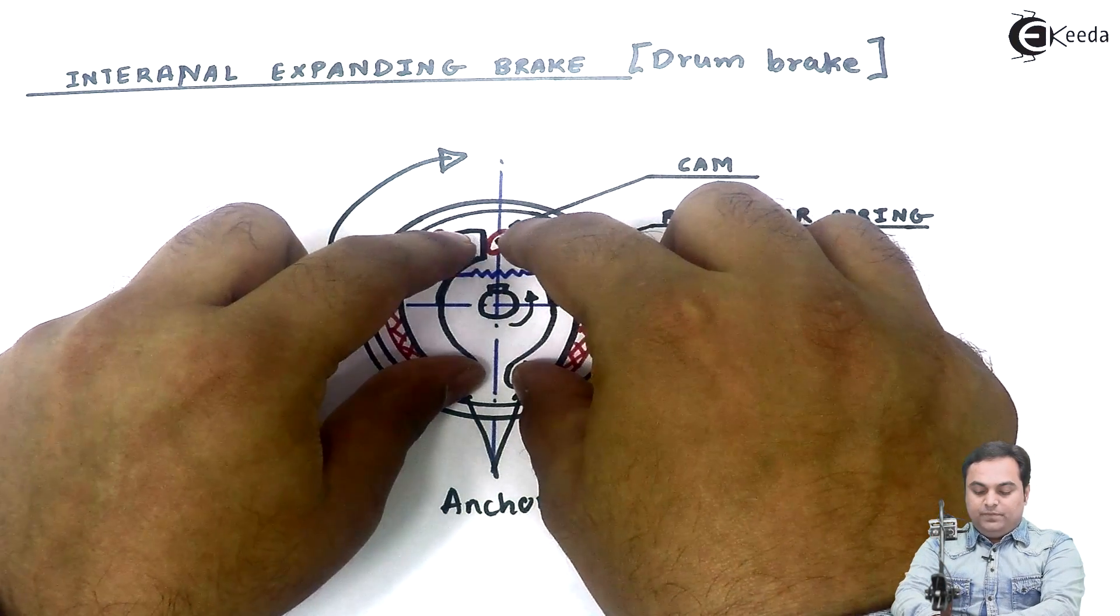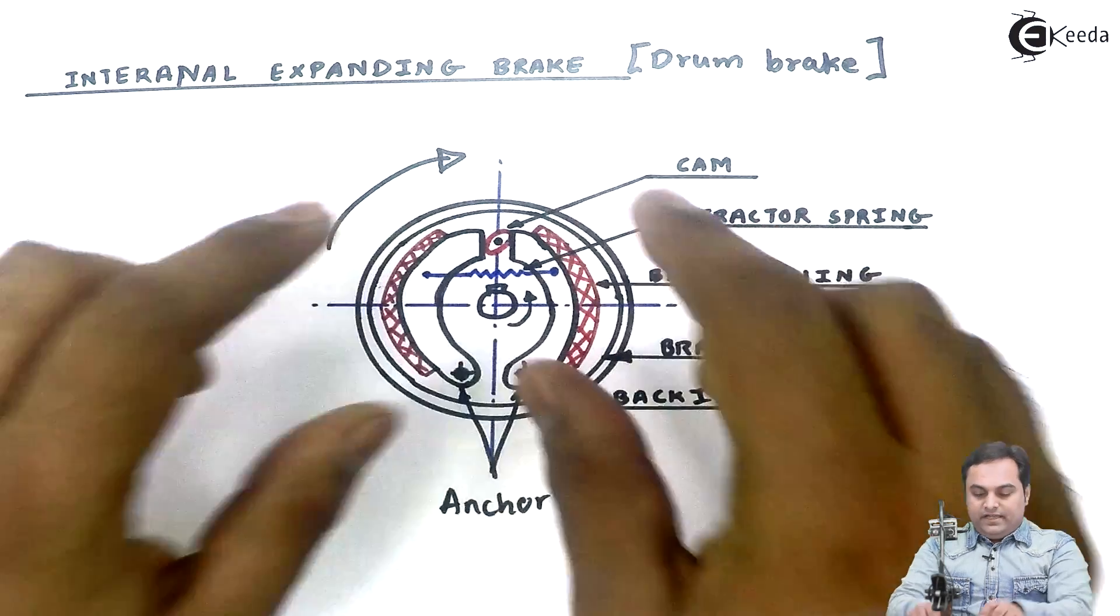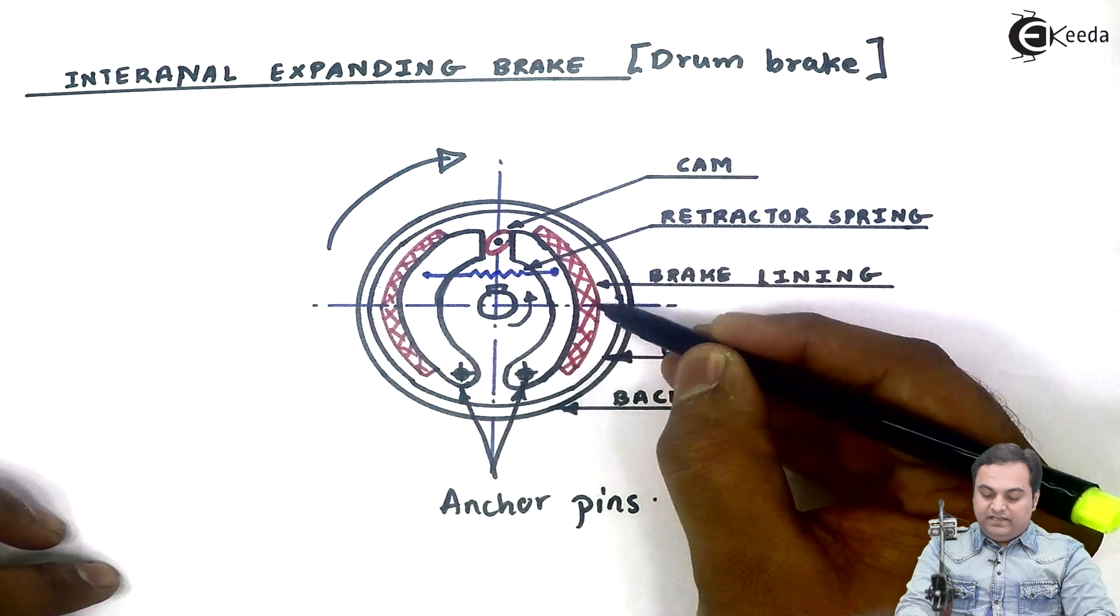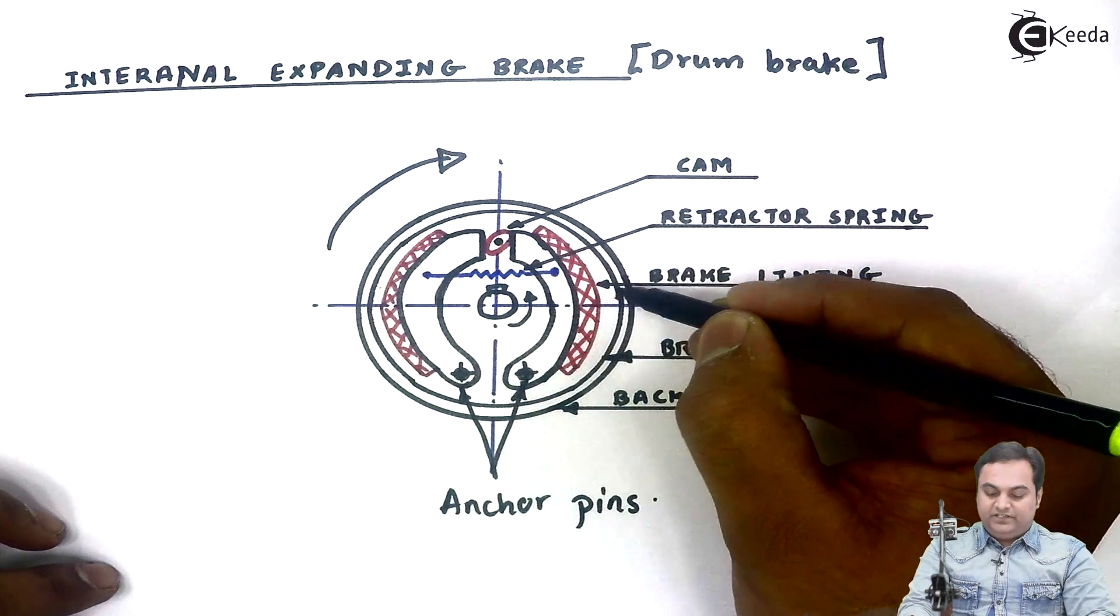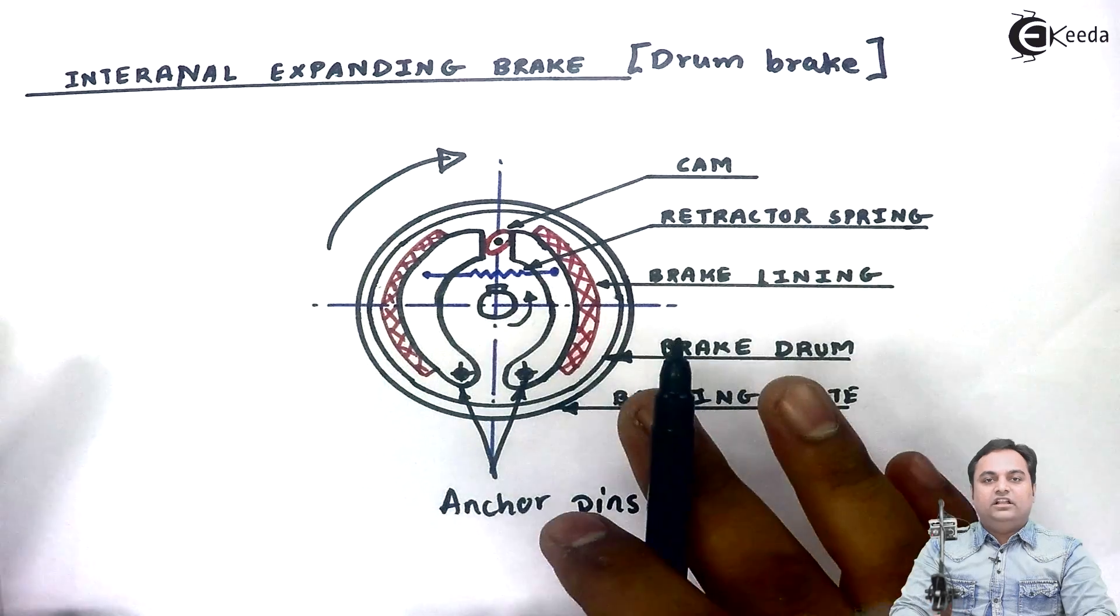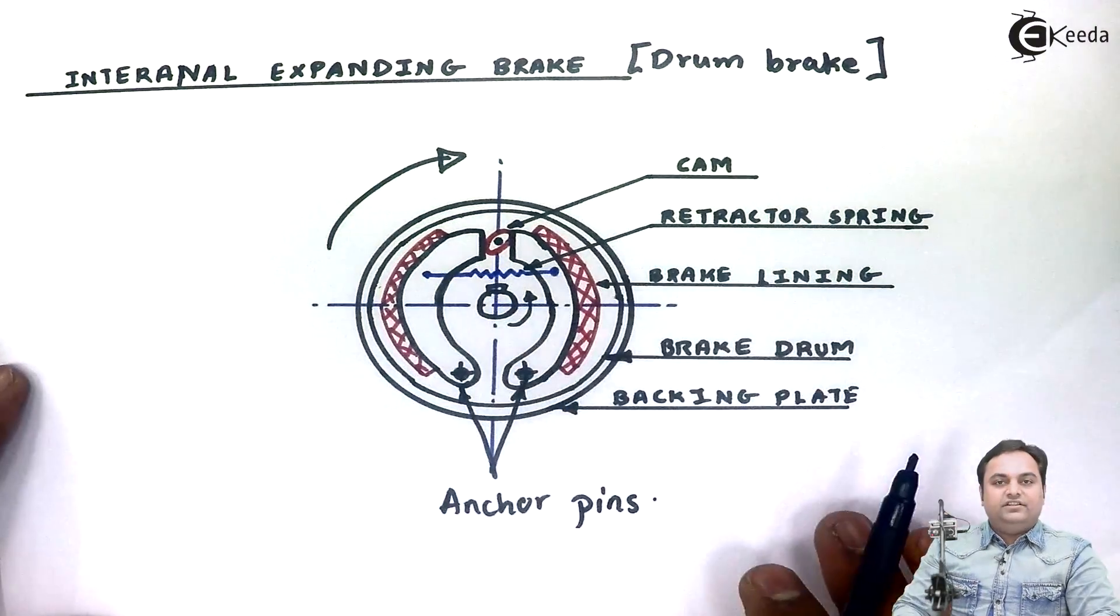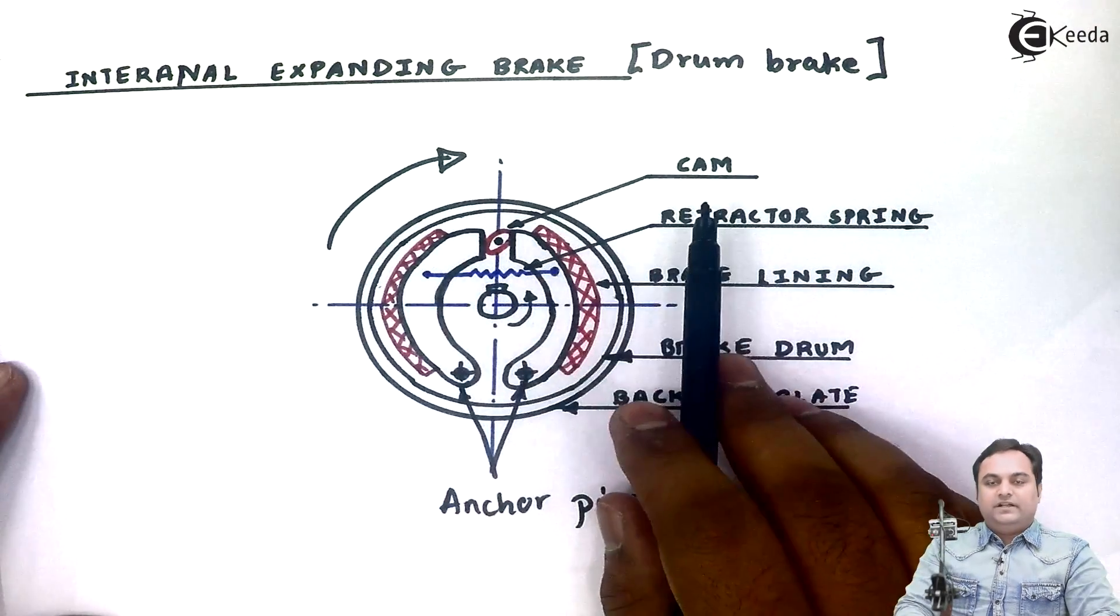And hence when they are moving outside, the surface of the brake lining comes in contact with the inner surface of the brake drum. And then the vehicle, or you can say the brake drum stops. So this was regarding the functioning of internal expanding brake.